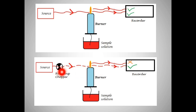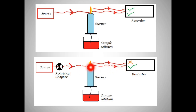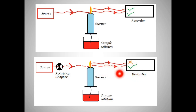Since the light from the source is present in an alternating form after being chopped, while the light emitted by the flame is not chopped and is not alternating, we can set the recorder to read only the alternating current. In this manner, the rotating chopper helps the recorder distinguish between the two light radiations.